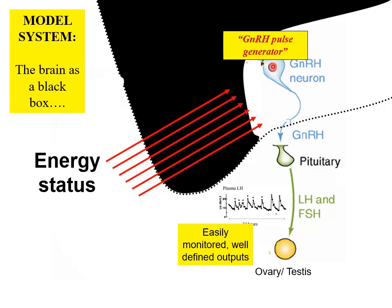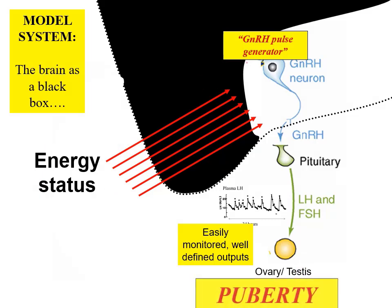Here we have our GnRH pulse generator driving the pituitary and then the whole reproductive system via the ovaries and testes, with energy status somehow interacting. The output of puberty — a major reproductive event where the whole reproductive system is turned on — has played a key part in developing our current understanding.